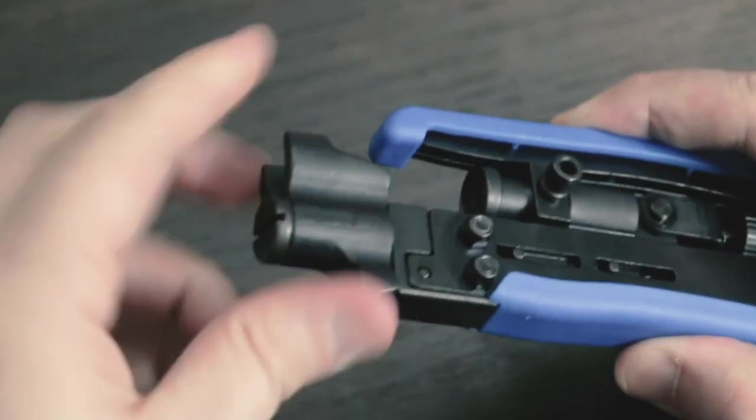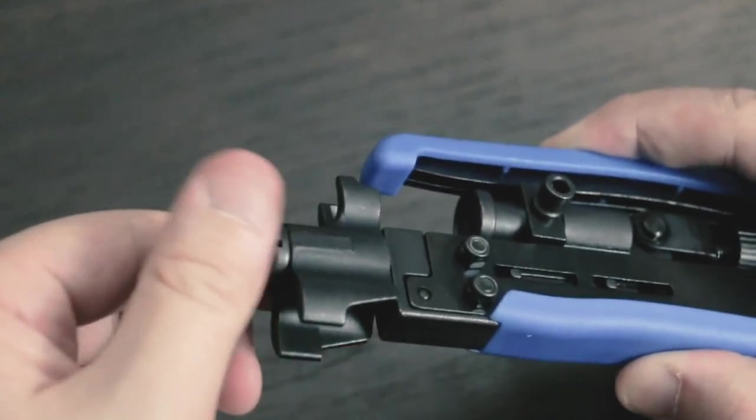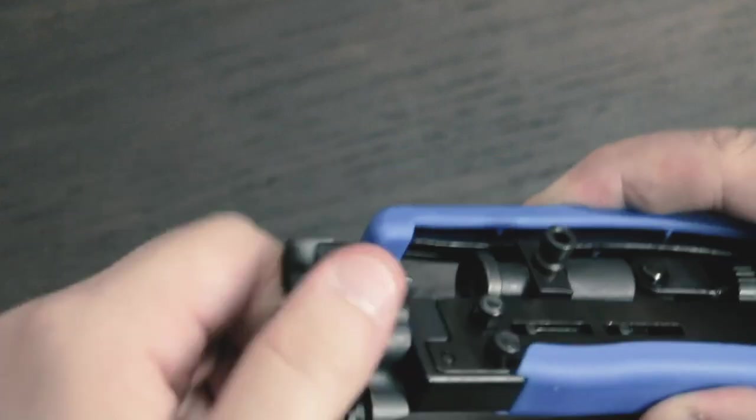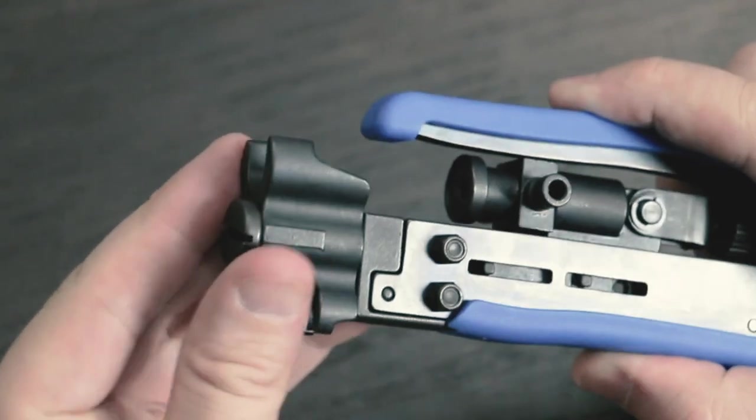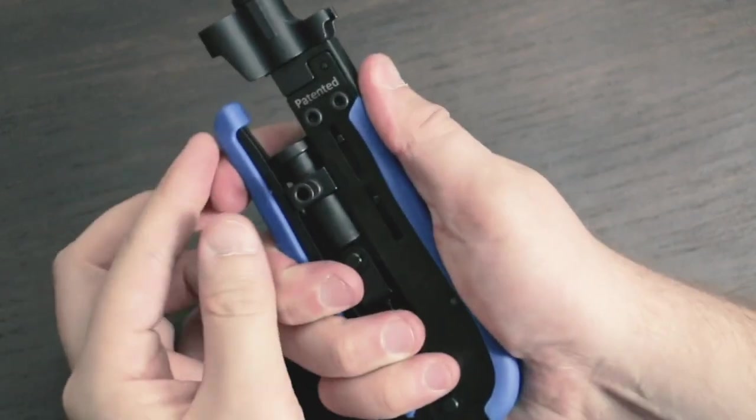Rotate the permanently attached cable guide to switch from RG6 and RG59 to thicker RG11 coaxial cable. Not to mention the tool has a durable plastic cover for a comfortable grip.